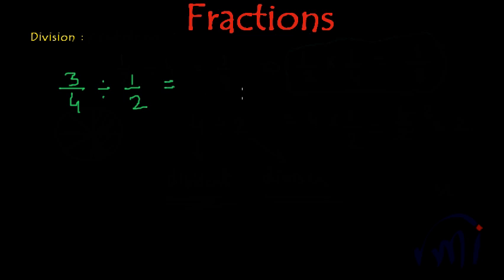What you have to do? You have to multiply 3 by 4 by the inverse of 1 by 2 and the inverse of 1 by 2 will be 2 by 1. And this will give you 2 times 1 is 2, 2 times 2 is 4, 3 by 2.